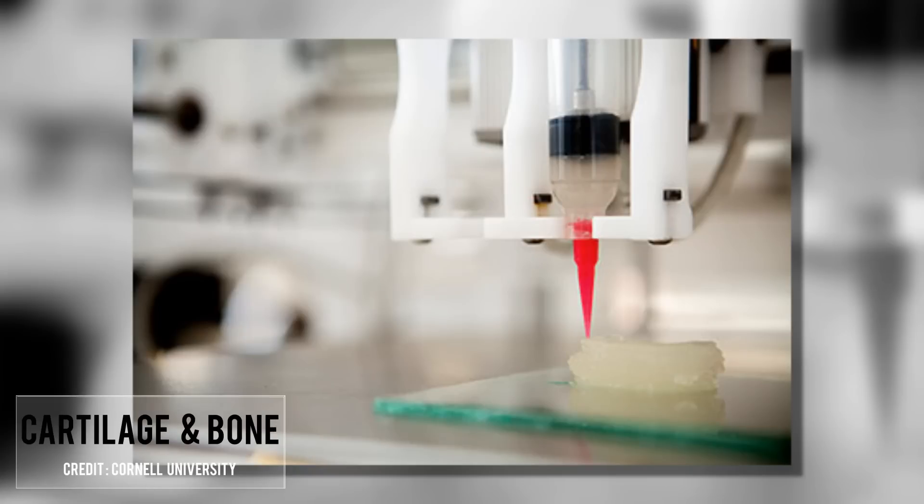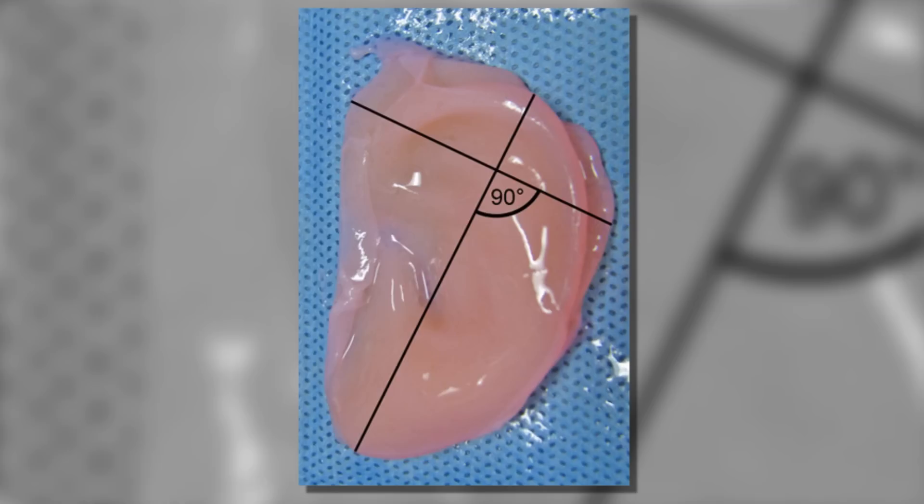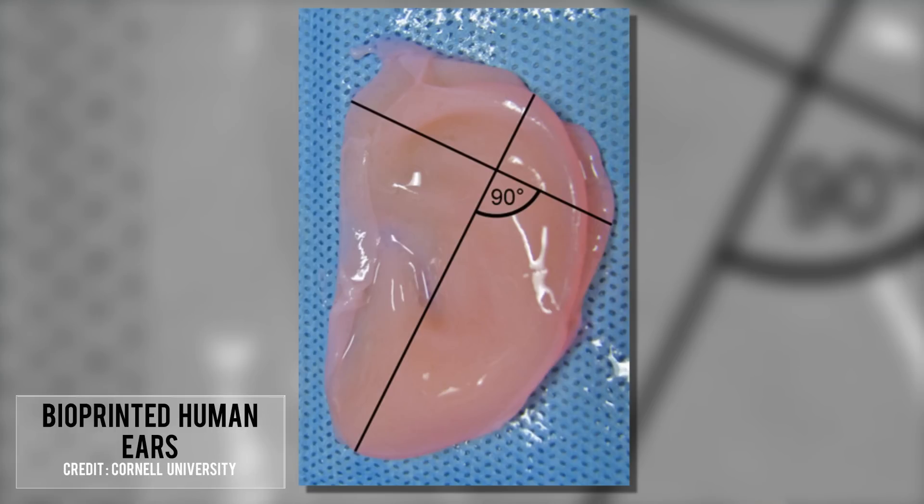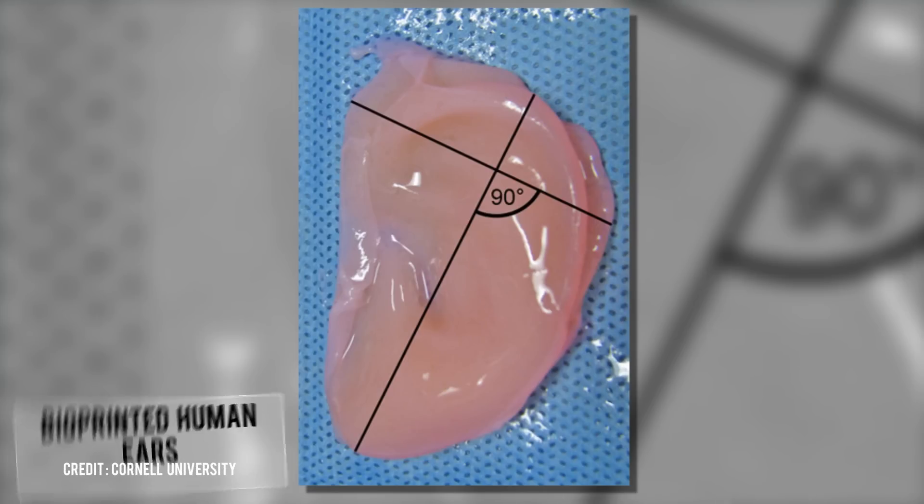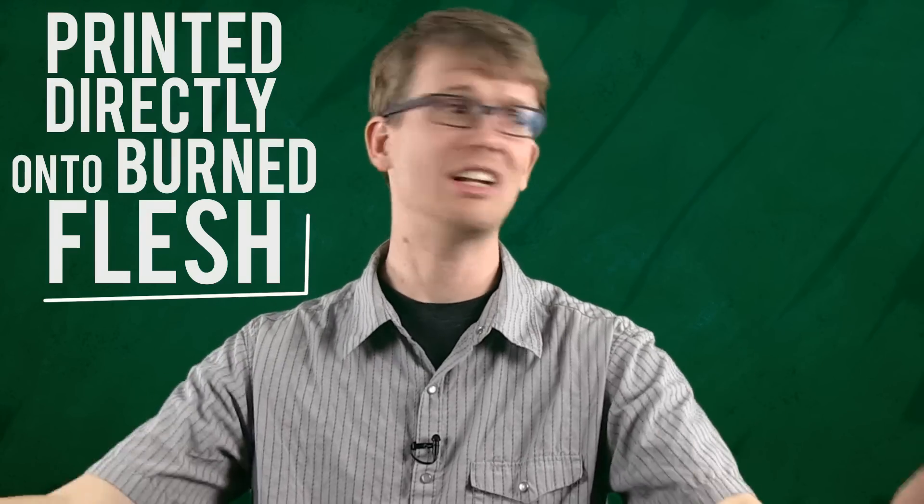Human stem cells have already been used to produce bits of relatively simple tissue, like cartilage and bone. Meanwhile, researchers at Cornell University are working tirelessly to give us bioprinted human ears, and others at Wake Forest University are developing skin that can be printed directly onto burned flesh. Because of research like this, some scientists say that bioprinting is the future of organ transplants.